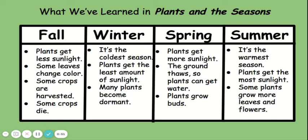Today, let's contrast the different plants in the different seasons. In fall, some leaves change color. In winter, many plants are dormant. In spring, plants get some buds. In summer, plants have more leaves and more flowers. This shows us the differences in the plants during each season — that's called contrasting.